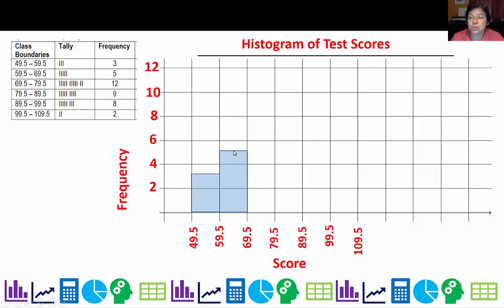The next one has a frequency of 5 so it should go up to here. The next one has a frequency of 12 so it's going to reach all the way to this top bar. Then we have a frequency of 9, then a frequency of 8, and then a frequency of 2. And there's your histogram. Once you have that frequency table made, making a histogram is actually pretty easy.